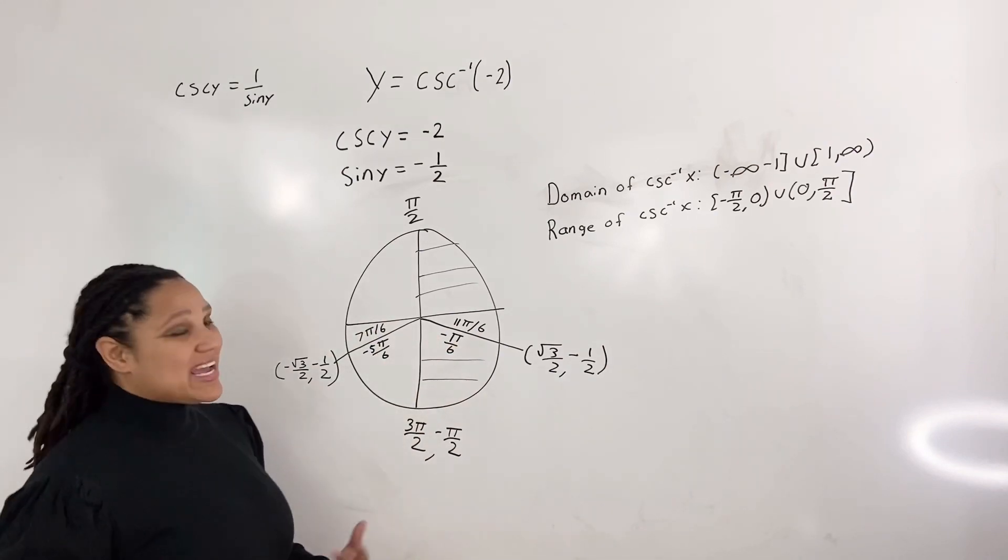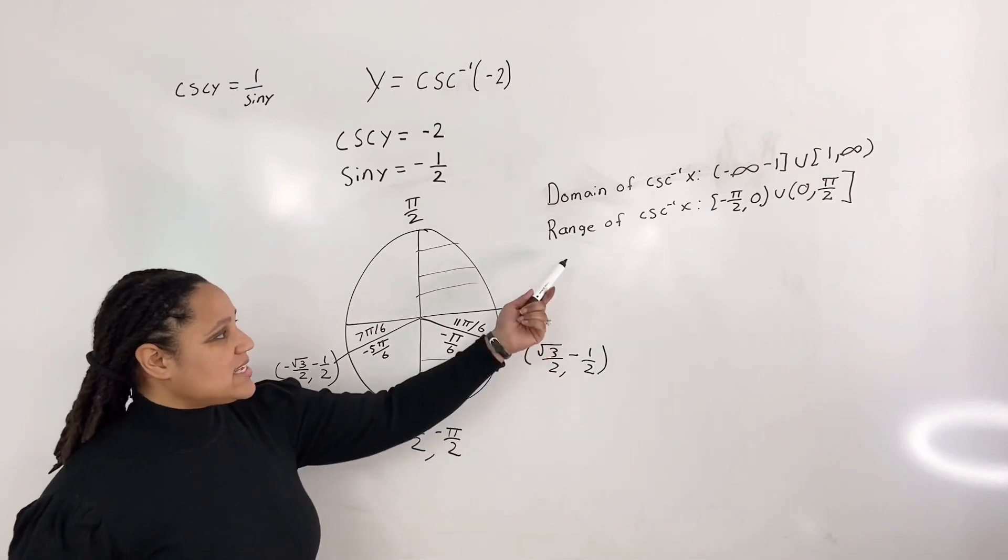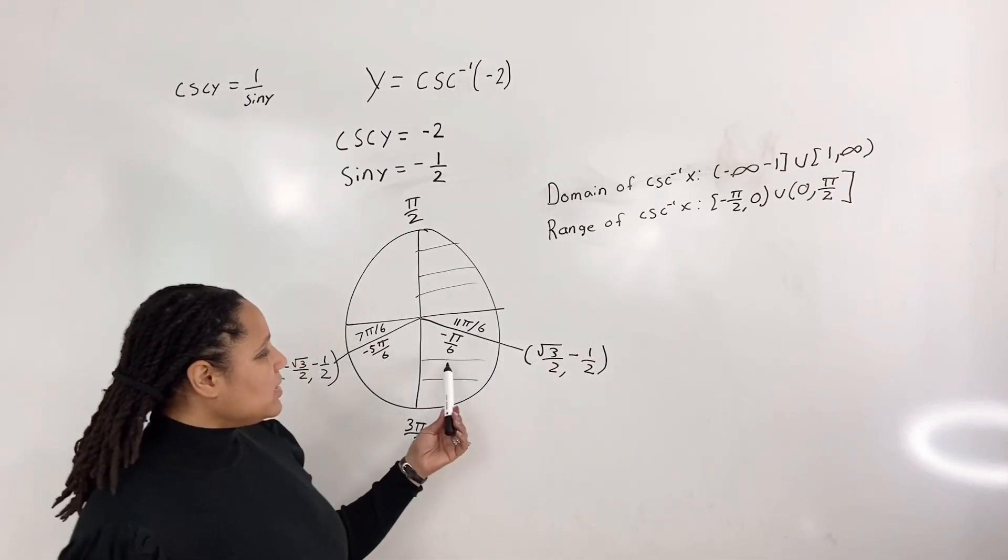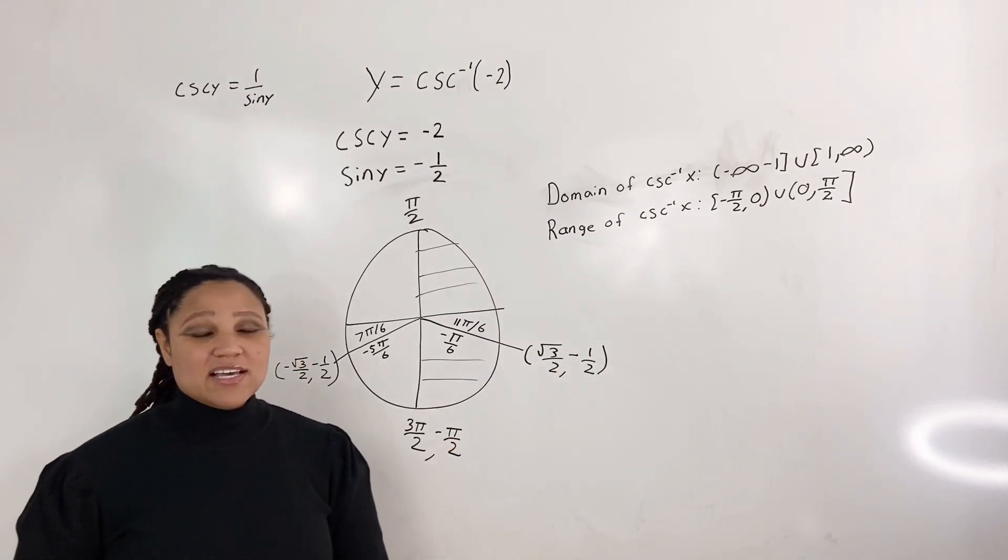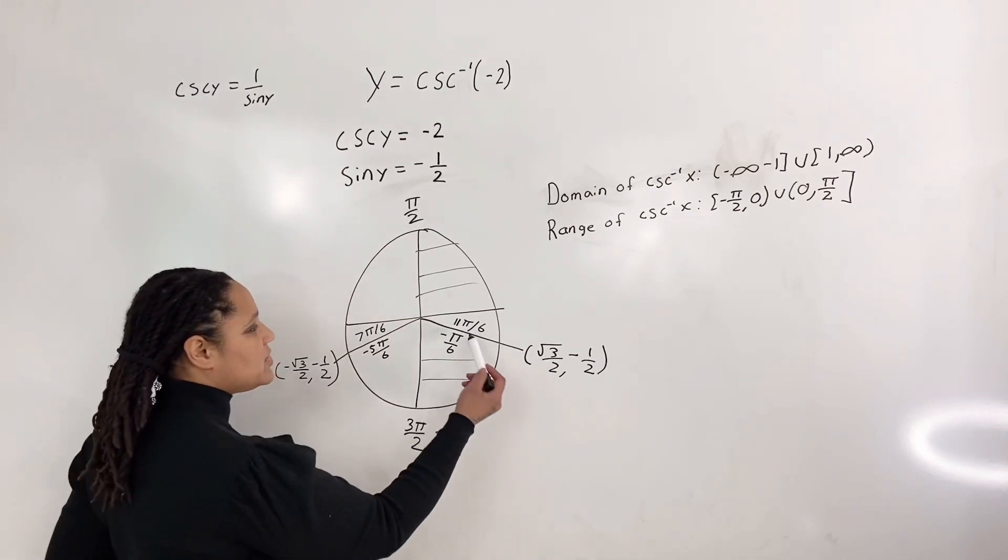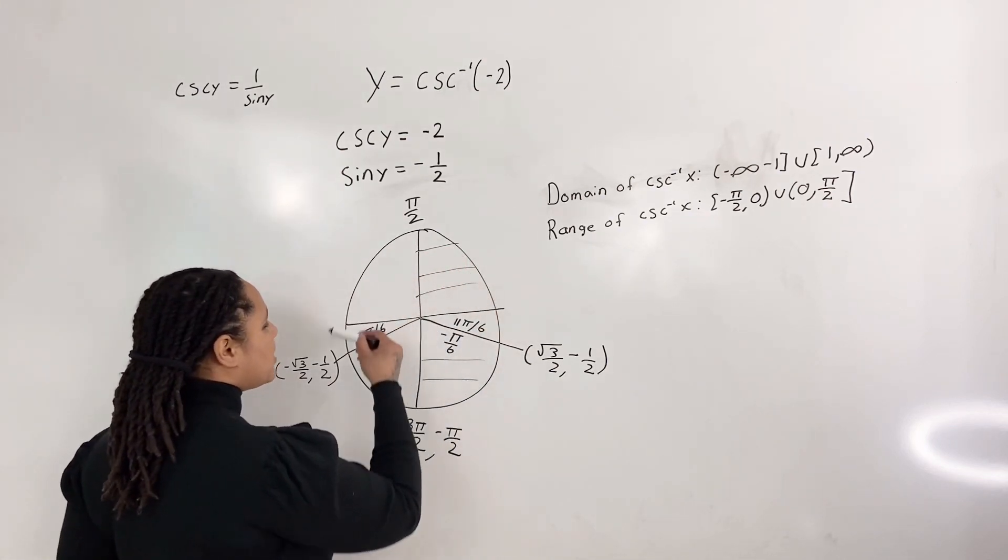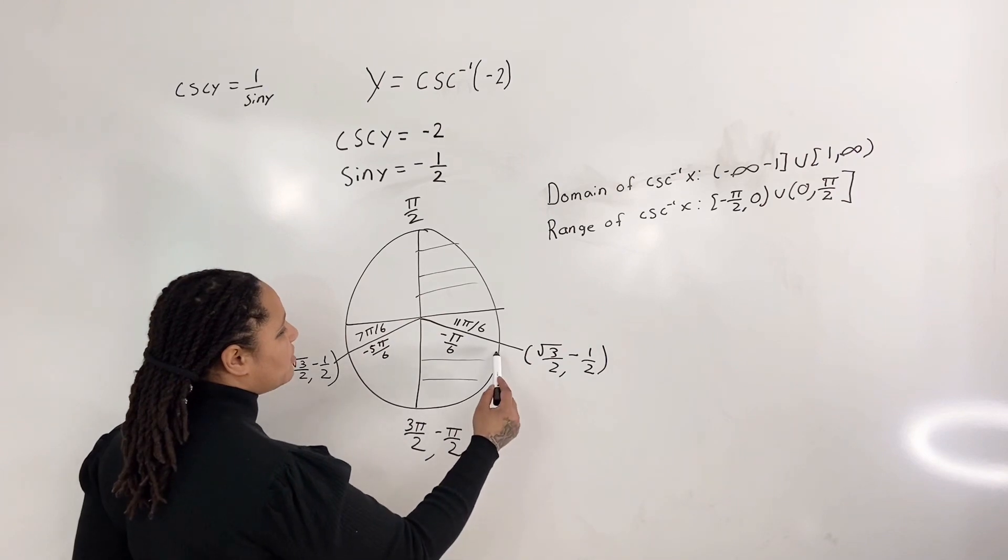So which one are we going to choose here? 11 pi over 6 or negative pi over 6? Well, we need to stay within the range. And only negative pi over 6 satisfies the range. Because if we were to choose 11 pi over 6, we would have to come around and it would go outside of our range.